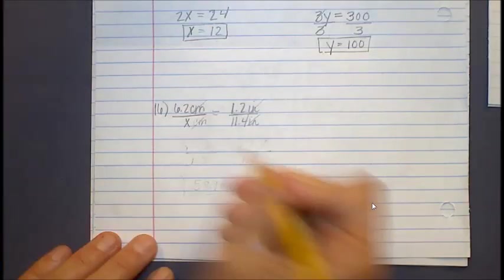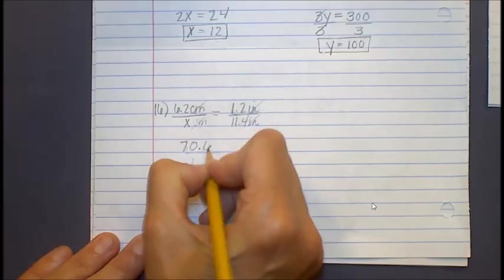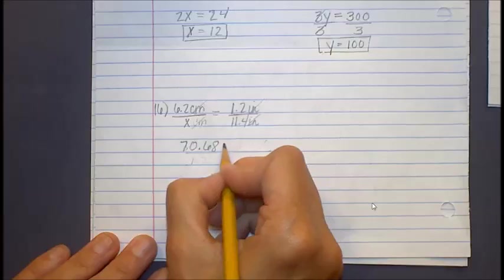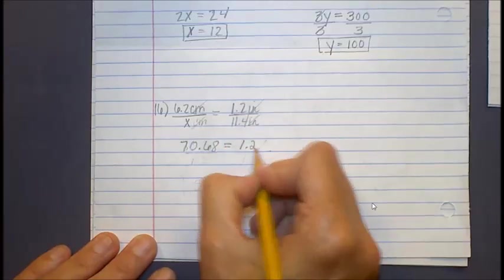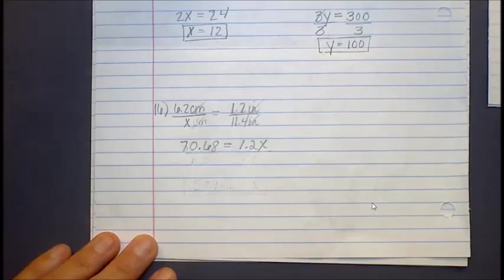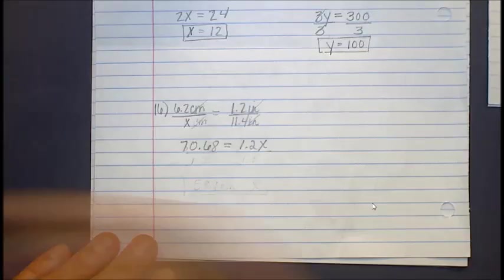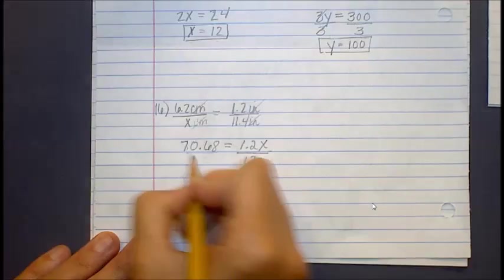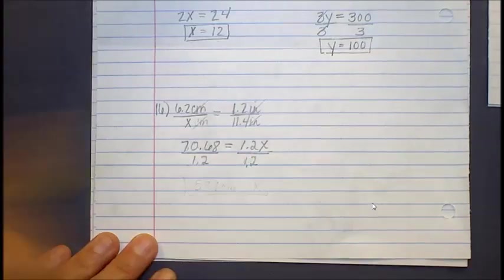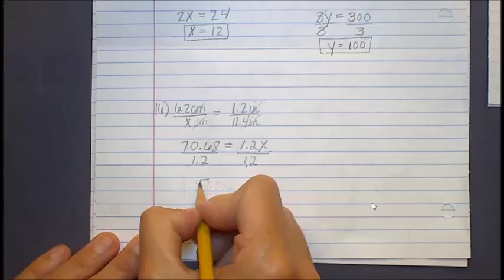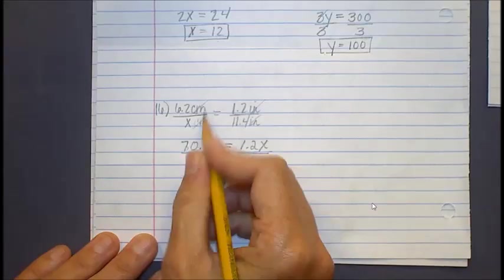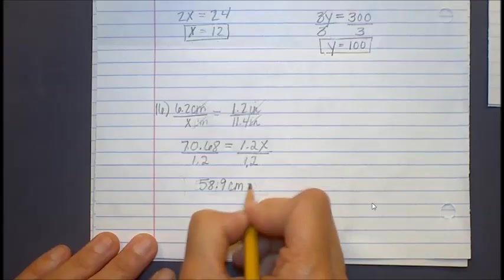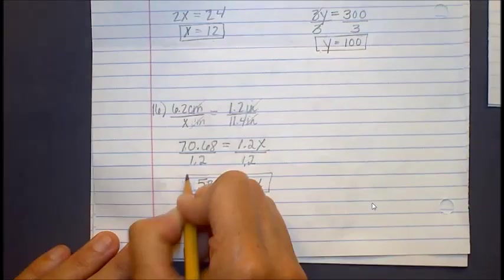So 6.2, if I take 6.2 times 11.4, I end up with 70.68. Is that right? Equal to 1.2 times x, right? So solving for x here, I'm going to divide by 1.2 on both sides. So divided by 1.2, I get 58.9. And I know if centimeters are on the top here, centimeters will be on the bottom here. It is equal to x.